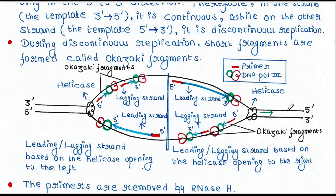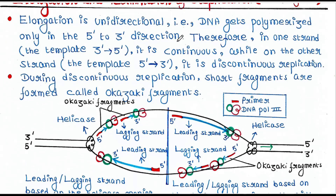Now, DNA gets polymerized only in the 5' to 3' direction — always remember this, not in the 3' to 5' direction. So here, DNA replication is continuous because the helicase is moving in this direction and DNA replication is also happening in the same direction, 5' to 3'. It is simply following the helicase. This strand is known as the leading strand, since replication here is continuous.